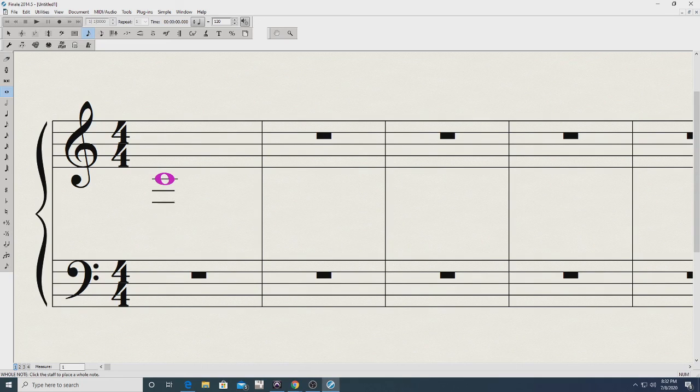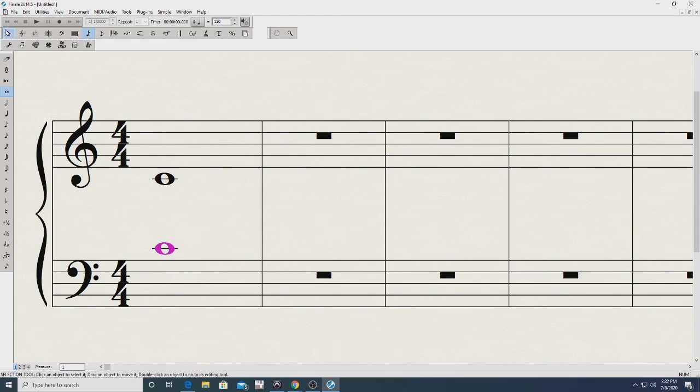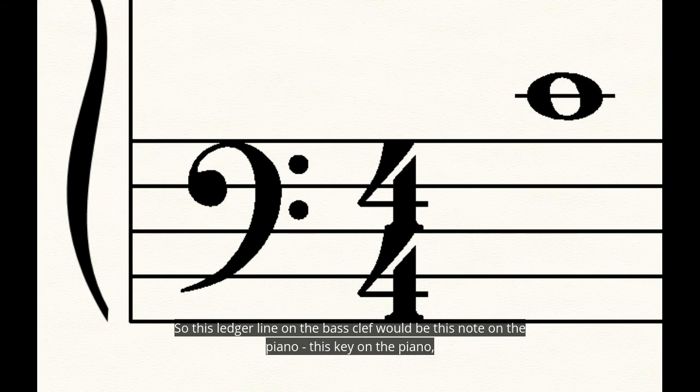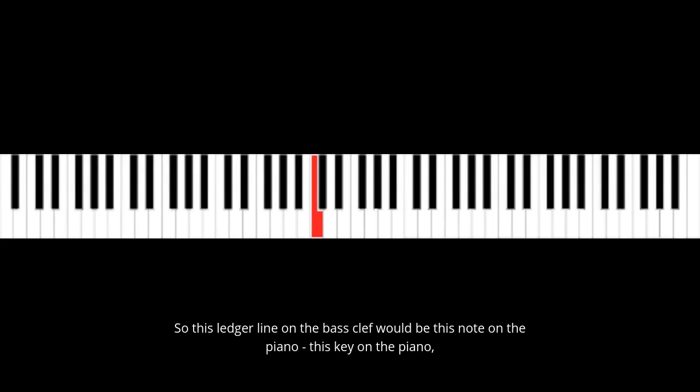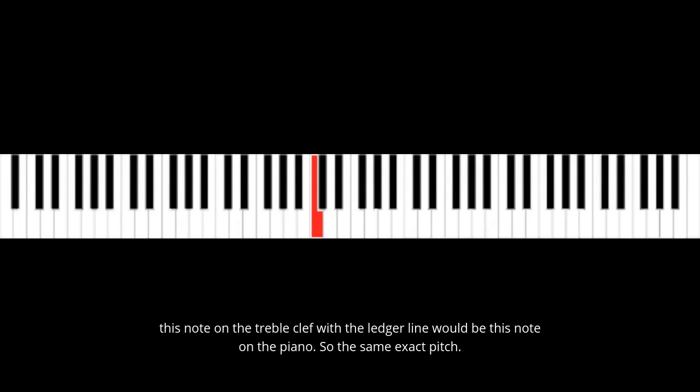It just so happens that this ledger line on the bass clef and this ledger line on the treble clef is the same note. It's the same exact pitch. So this ledger line on the bass clef would be this note on the piano, this key on the piano, and this note on the treble clef with the ledger line would be this note on the piano. So the same exact pitch.